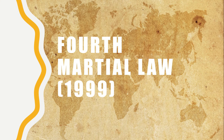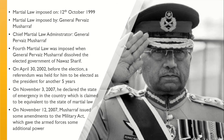4th Martial Law 1999. Martial Law was imposed on 12th October 1999. Martial Law was imposed by General Pervez Musharraf. Chief Martial Law Administrator was General Pervez Musharraf. 4th Martial Law was imposed when General Pervez Musharraf dissolved the elected government of Nawaz Sharif. On April 30, 2002, before the election, a referendum was held for him to be elected president for another 5 years.